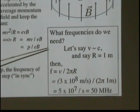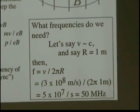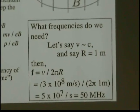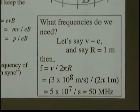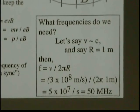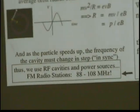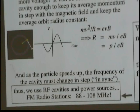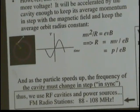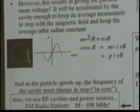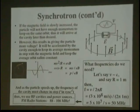What frequencies do we need? If our velocity is about the speed of light, c, and we have a one-meter radius particle accelerator, we can use our relations: frequency equals v over 2 pi r. We get about 5 times 10 to the 7th oscillations per second, or 50 megahertz. So we use RF cavities and power sources around FM radio station frequencies — the FM band runs from 88 to 108 megahertz. If you had a slightly higher bandwidth radio, you could actually drive around Fermilab and hear the particle accelerator broadcasting at about 53 megahertz.